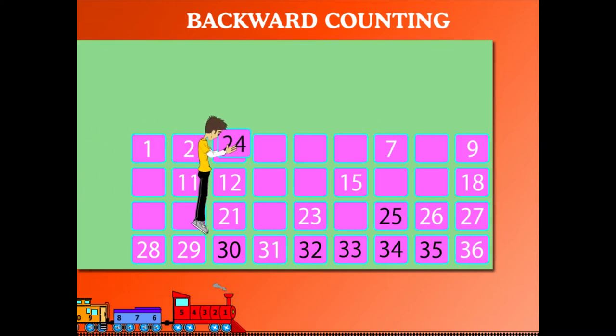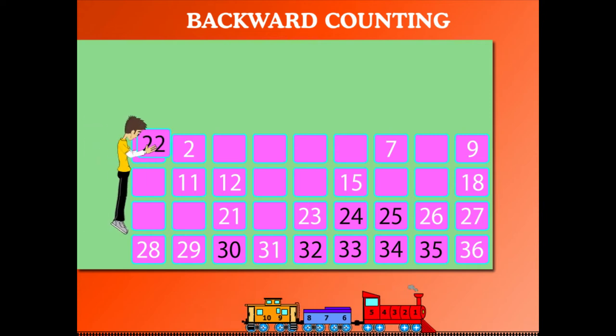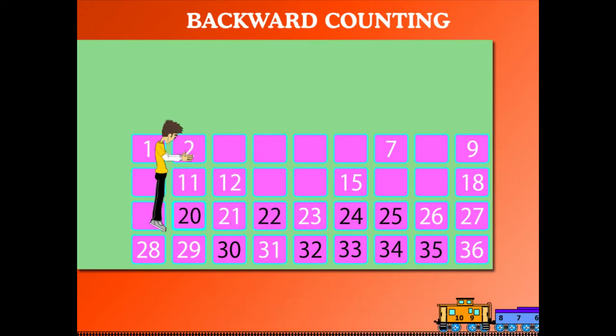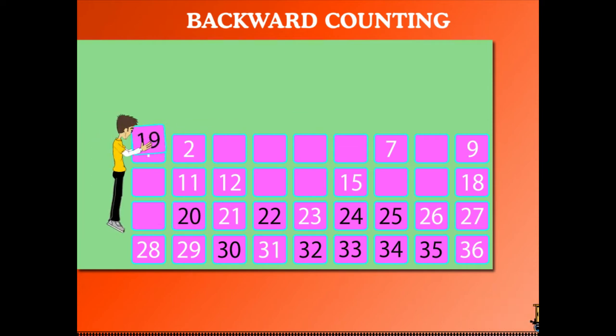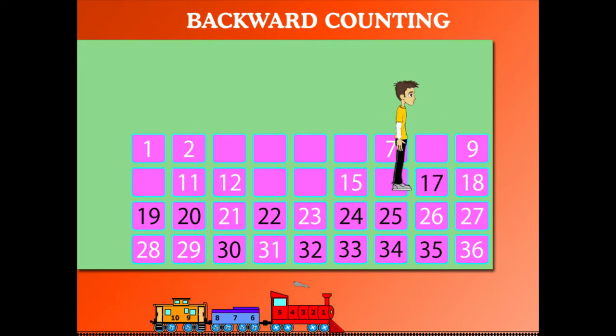Sammy fills in 25, then 24, 23, then 22, 21, then 20 and 19. Here is 18. Sammy fills 17 and 16.